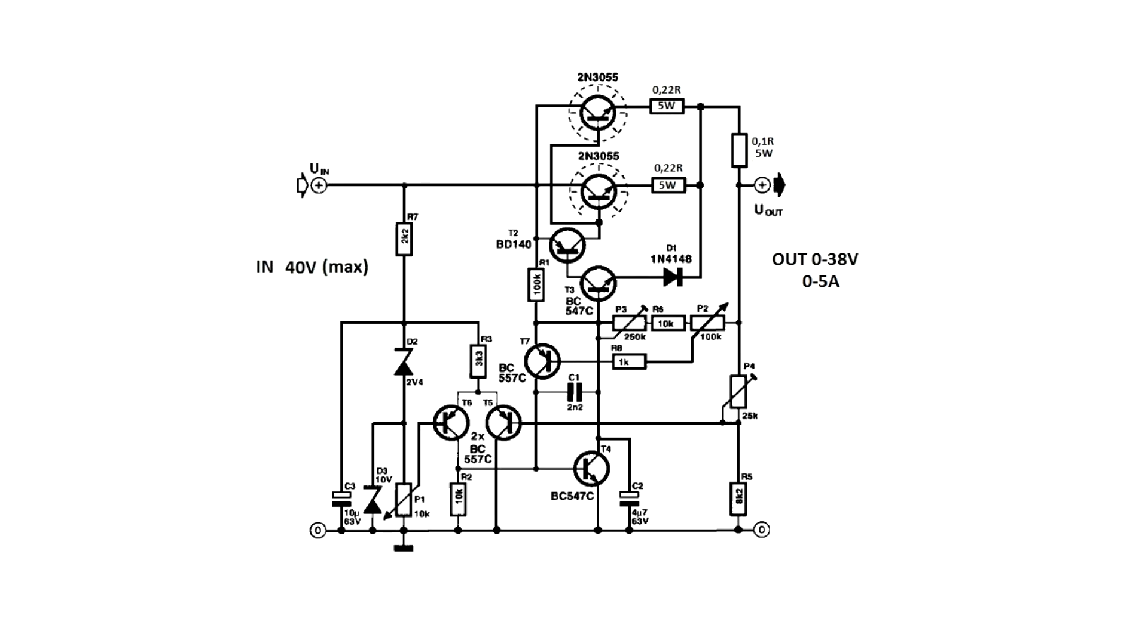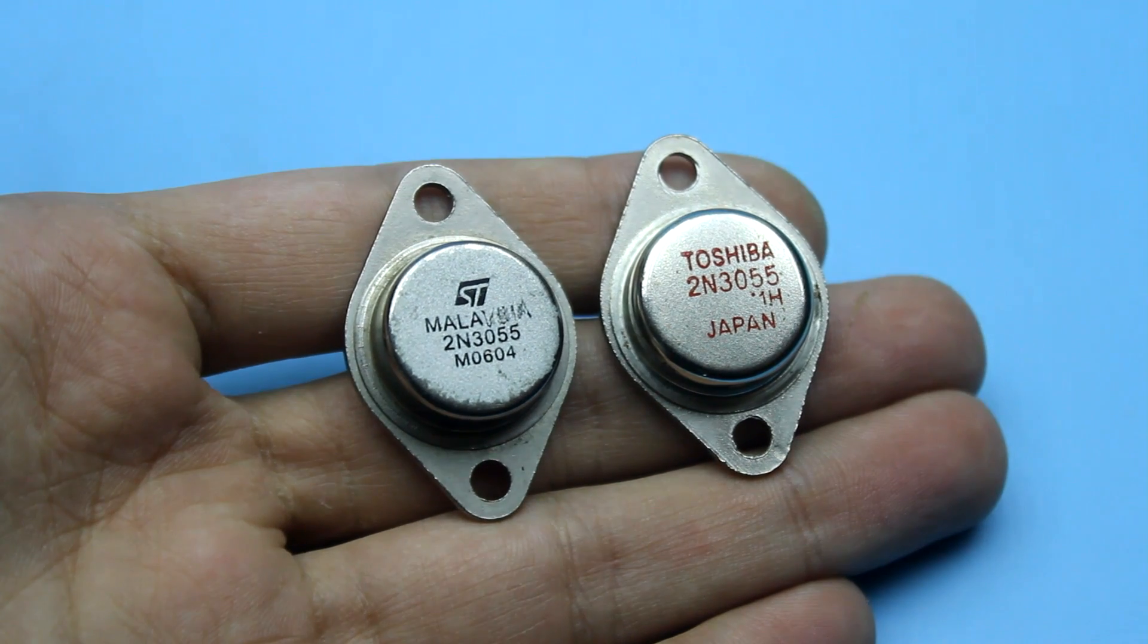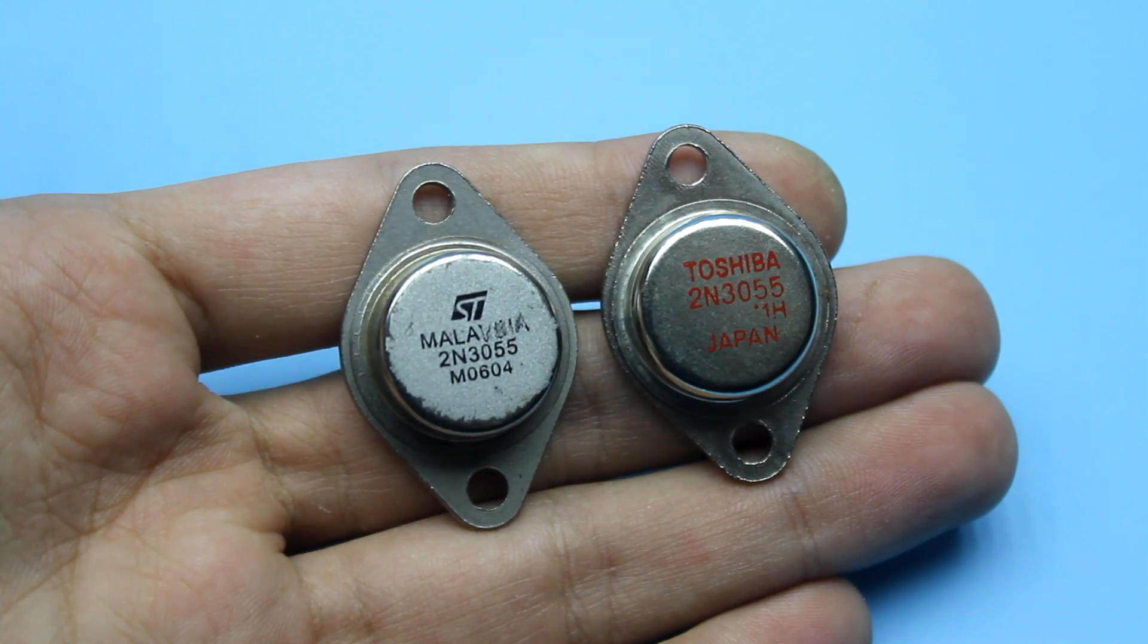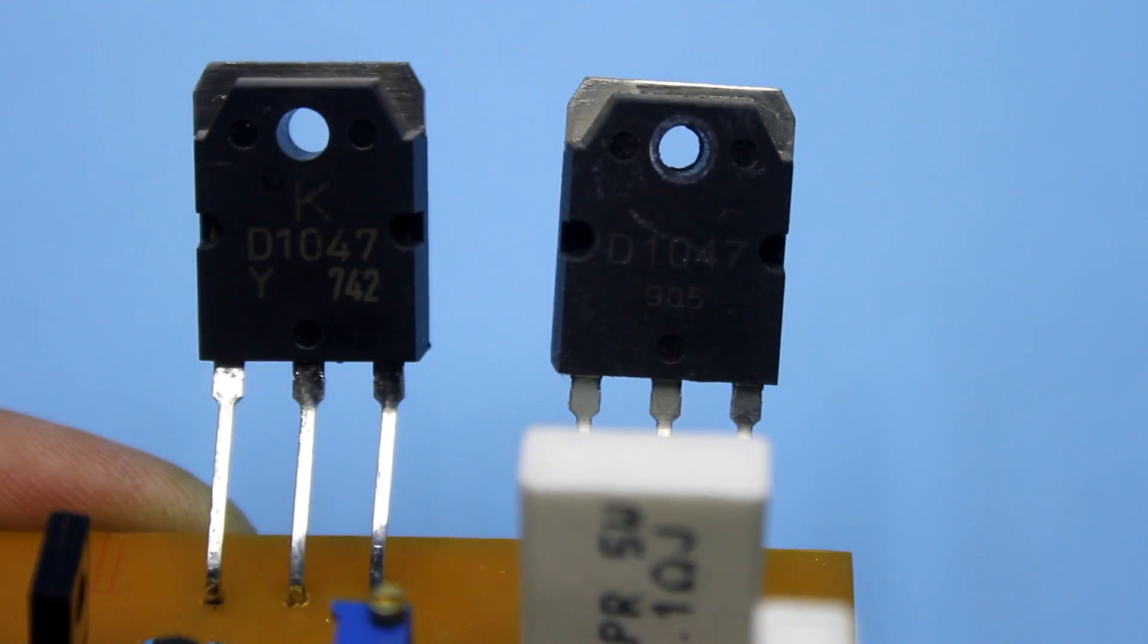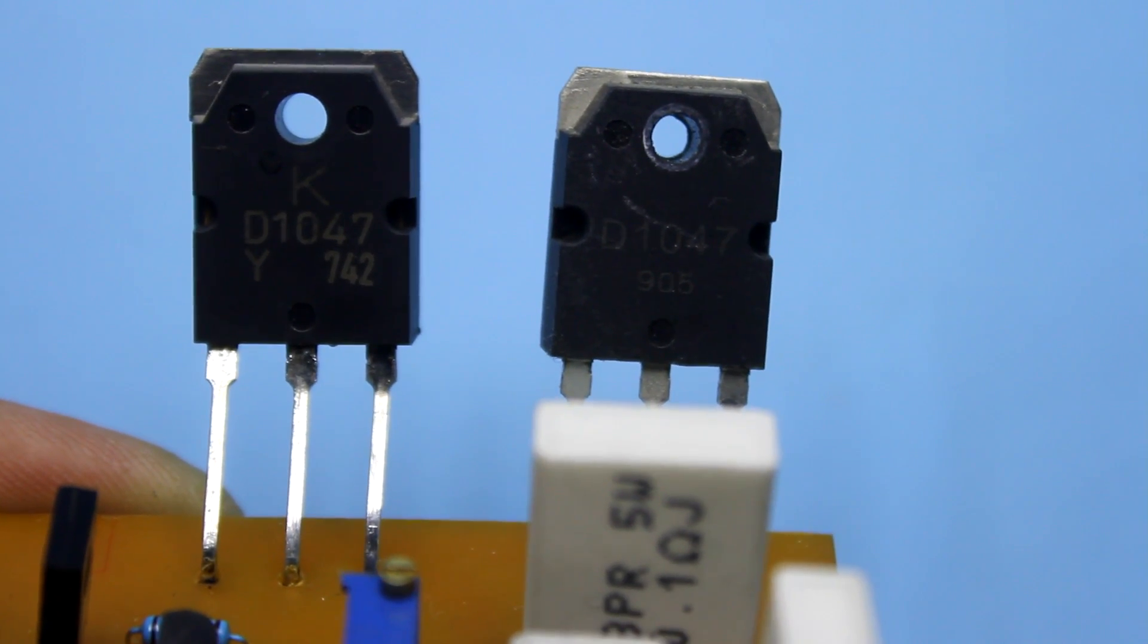Since this circuit is linear, it is preferable using transistors in the metal housings. If you haven't them, then use transistors in the TO247 package, so that not to get problems with heat emission.